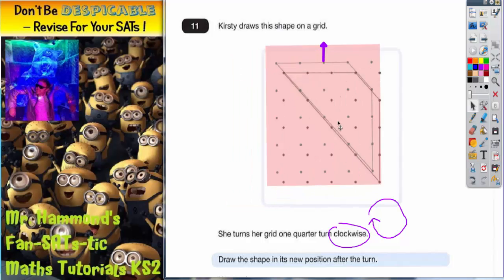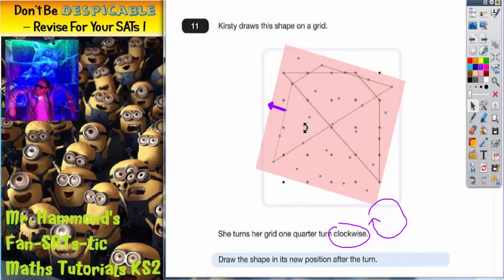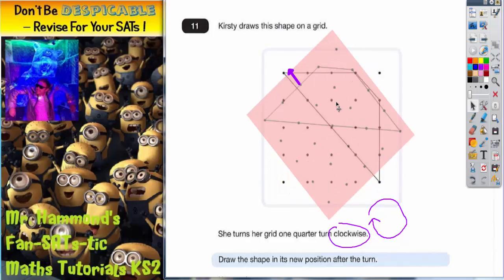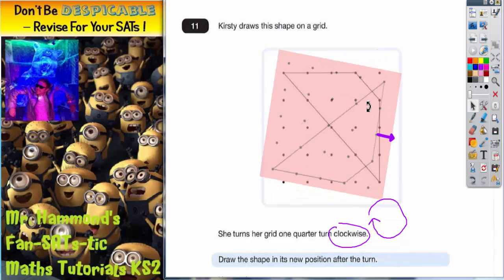For example, if I place the tracing paper over the top of the shape and then try and turn it - clockwise is this way around, so it's going the same way around as the clock. So one quarter turn clockwise would mean the arrow then points east.